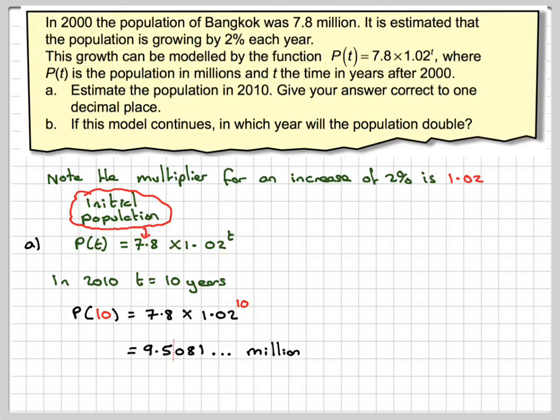Giving our answer to 1 decimal place, that will be 9.5 million to 1 decimal place.